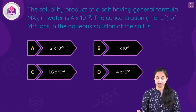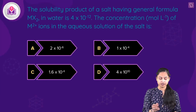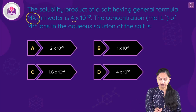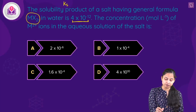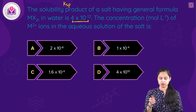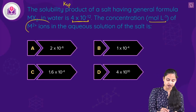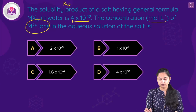The solubility product (Ksp) of a salt having general formula MX₂ in water is 4 × 10⁻¹². We need to find the concentration in moles per liter of M²⁺ positive ions in the aqueous solution of the salt.